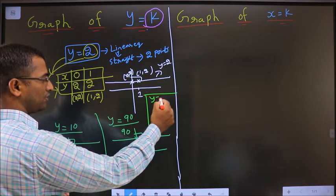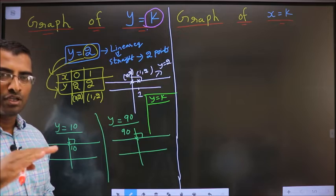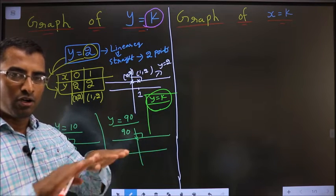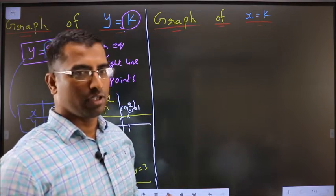Conclusion is, whenever y equal to k, k being any constant, you will get a horizontal line. That is first conclusion. Second conclusion, y equal to k, you will get a line perpendicular to y-axis. Remember these two. Y equal to constant, horizontal line or a line perpendicular to y-axis. Second, graph of x equal to k.